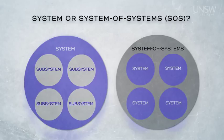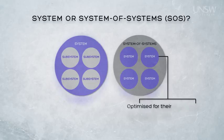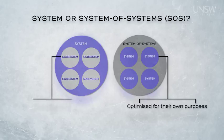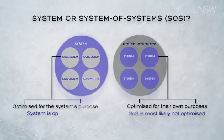The distinction between systems as elements of a system of systems and subsystems as elements of a system is therefore that a system of systems comprises systems that have been optimised for their own purposes before joining, whereas a system comprises subsystems that have been optimised for the system's purpose rather than their own. From the higher level perspective, a system of systems is most likely not optimised because the elements were first optimised for their own purpose before joining. Since the distinction between systems of systems and systems can become quite blurred, in this course we'll focus on systems whose elements are all subsystems — systems that are systems genuinely in their own right.